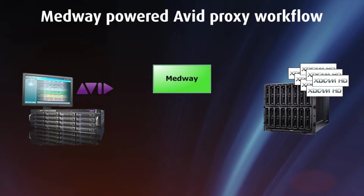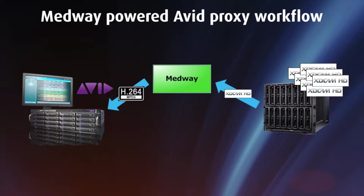During this process, Medway will read the XDCAM HD file, unwrap it from the MXF OP1A wrapper it was in, perform the transcode to H.264, and then rewrap the content as MXF OP Atoms and write the files into the Avid storage. The source file could be one or more full clips, as shown here, or for example, an EDL shot list provided by a MAM system.